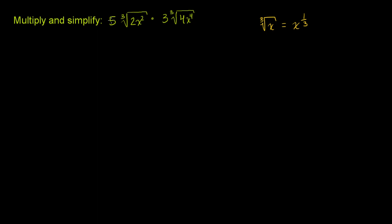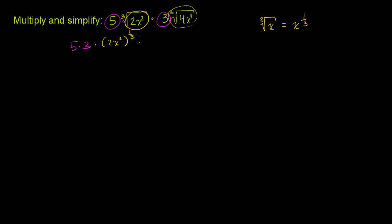So I have the 5 and the 3, that's going to be 5 times 3. And then we have the cube root of 2x squared, which I can rewrite as 2x squared to the 1/3 power. And then I have the cube root of 4x to the 4th, so that's the same thing as 4x to the 4th to the 1/3 power.